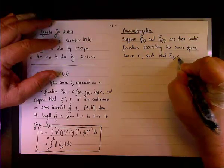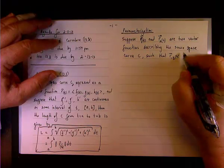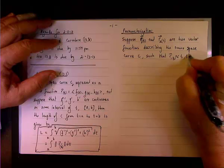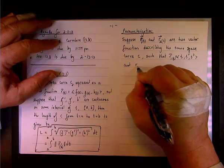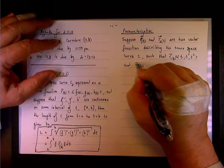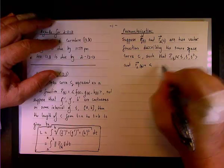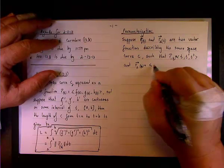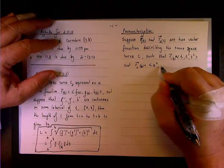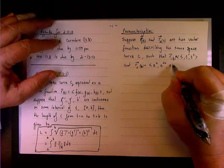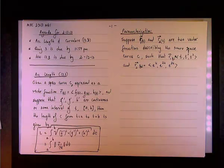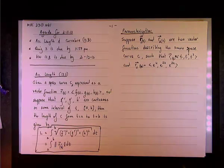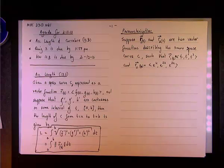Okay, so here's an example such that R1 of T will be the vector T, T squared, and T cubed, and R2 of U would be the vector instead of T we'll have e to the U, instead of T squared we'll have e to the 2U and e to the 3U for replacing T cubed.